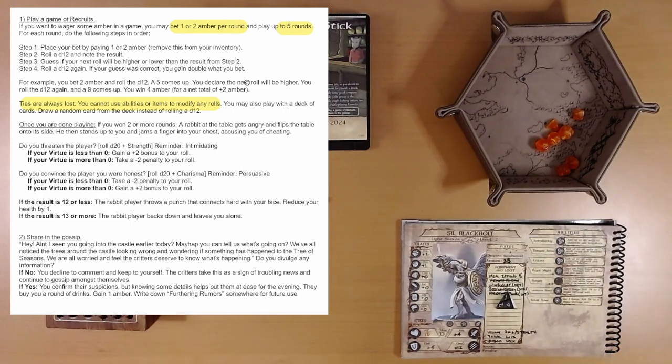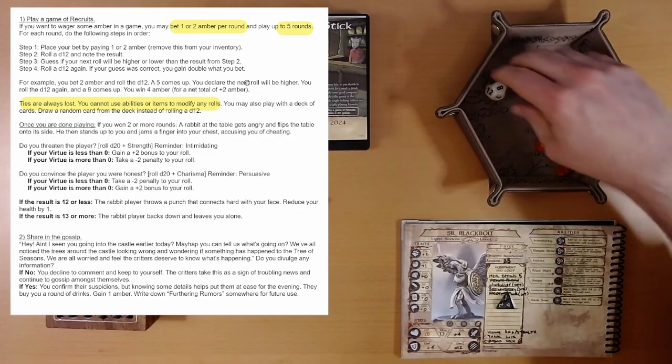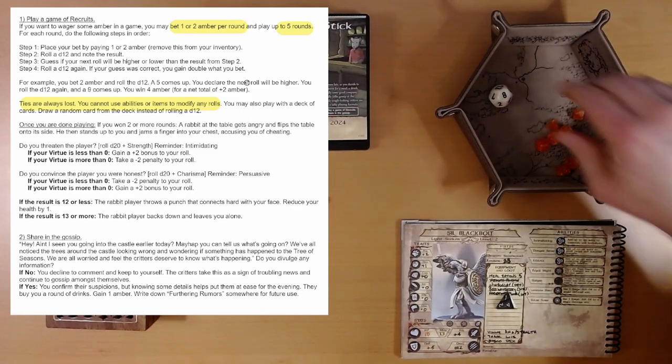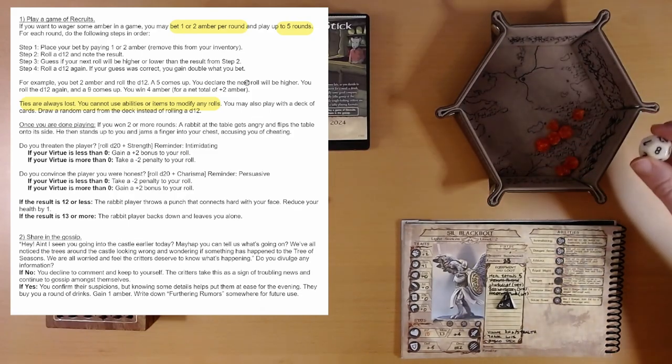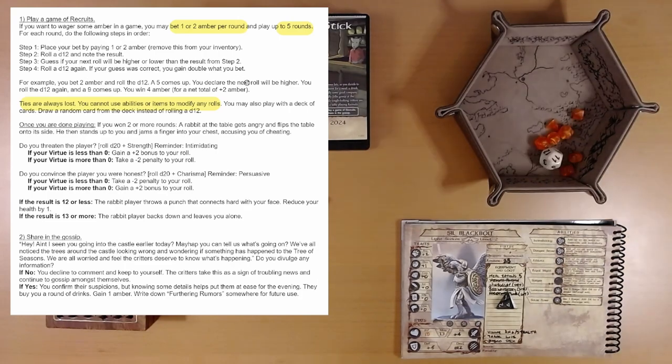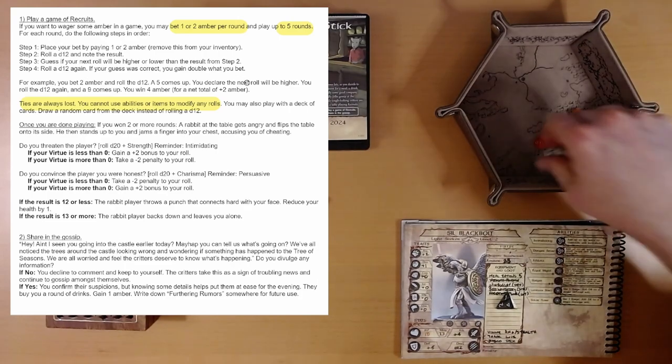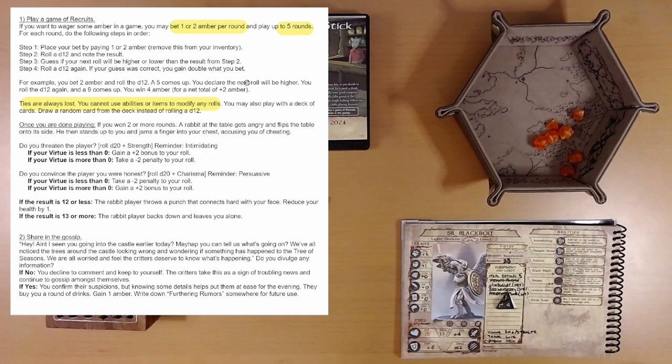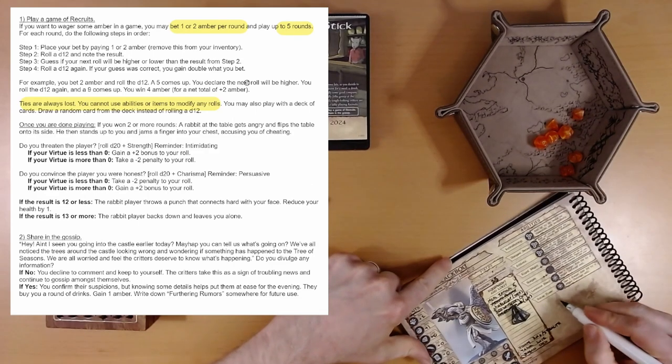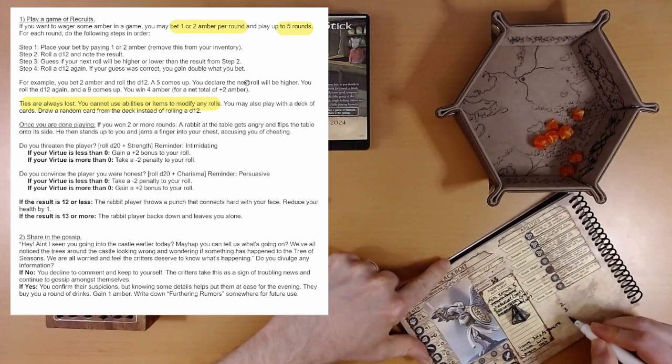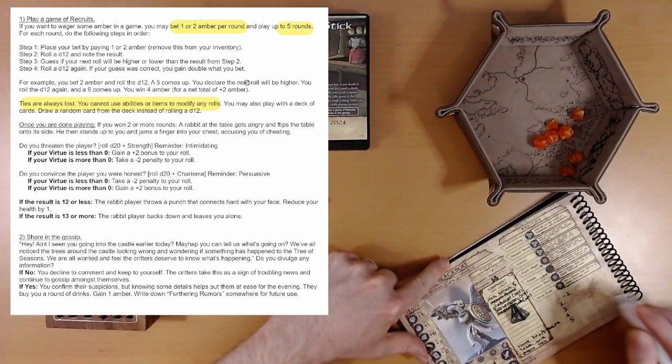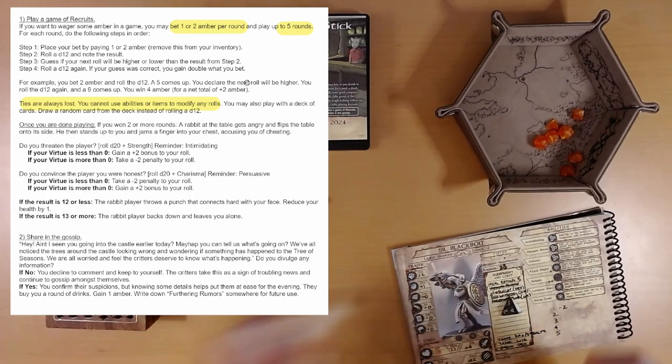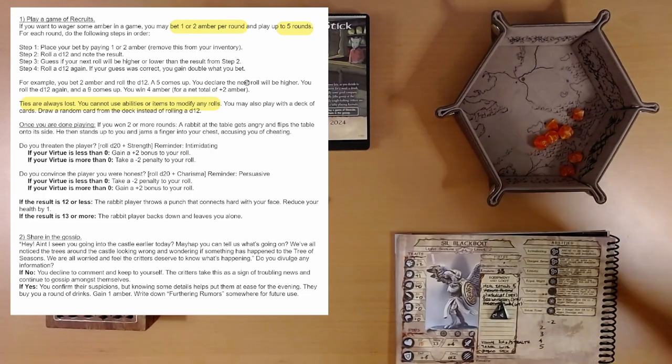Roll an eight. I'm gonna guess we're gonna bet two amber each round. So I'm gonna guess that the next roll is lower, and it is not. So we're out two amber. That was round one. We'll write this down. One, two, three, four, five. Minus two. Excellent. Off to a good start.